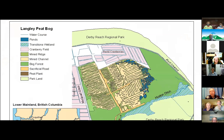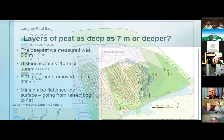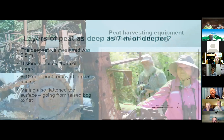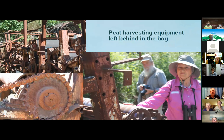Peat mining happened here too. You can see all these ridges and channels — the ridges are what the machinery left behind; the channels are where the peat got scooped out. Over several decades they took out a lot of peat, and that naturally affects the bog. The deepest we measured was 5.5 meters — that's over 15 feet, and it's still pretty deep. But historically it was likely much deeper, and a lot was removed in peat mining. The mining also tended to flatten the bog, so it was no longer a raised bog. Our key question was: can this bog be restored?